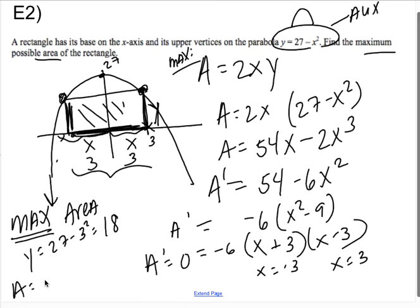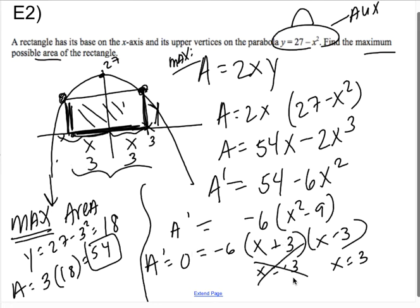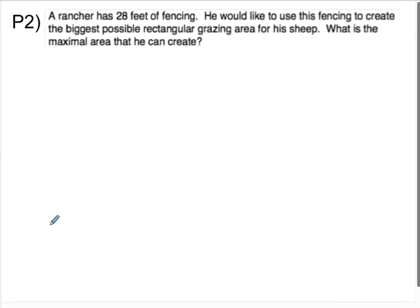They don't want the X values where the max area occurs. They want the max area. Well, if this is a 3, that makes this also a 3. And since Y is 27 - 3², Y is going to be 27 - 9, which is 18. So the max area is going to be 3 times 18, which is 54. There are no units here. If there had been units, you would have to use units. Again, I didn't bother to make the sign chart because it's the only possible critical numbers. There's no such thing as having a side length of -3, which is why this doesn't make logical sense in the context of this problem.